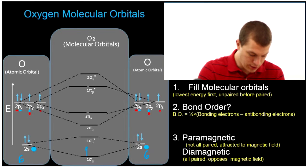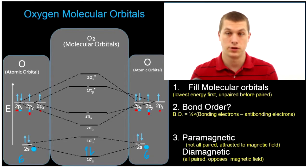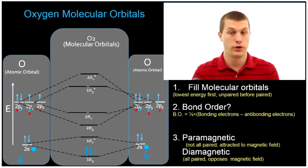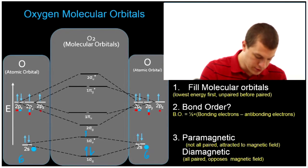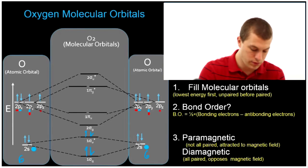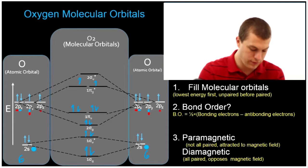That's going to be one and two down here. When we fill in these, we're going to follow the same rules we did for atomic orbitals — fill the lowest energy first, and fill them unpaired before paired. Then we go up to the 1 sigma antibonding orbital, then our 2 sigma orbital, counting up through electron six, seven, eight, nine, ten, eleven, and twelve.